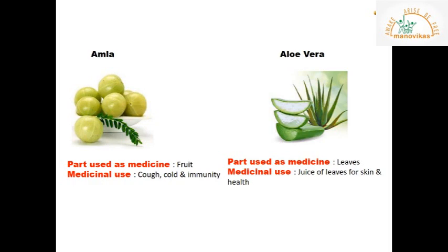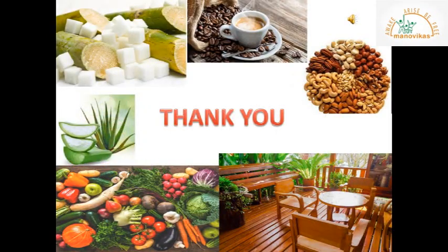Aloe vera: the leaves of the aloe vera plant are used as medicine. The juice of the leaves is used for skin and other health benefits. Plants are important for our survival as they provide us with oxygen, food and a wide variety of things. So go ahead and plant more trees! I hope you have understood today's lesson. I'll see you next time with another video. Thank you.